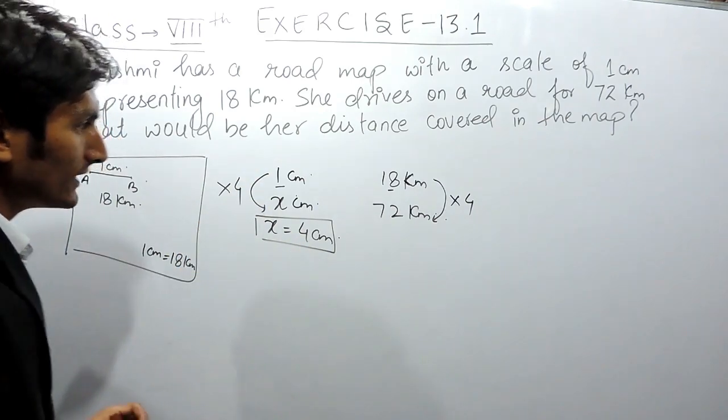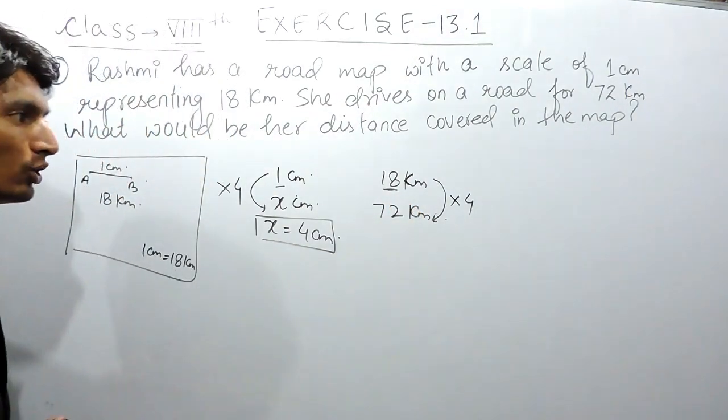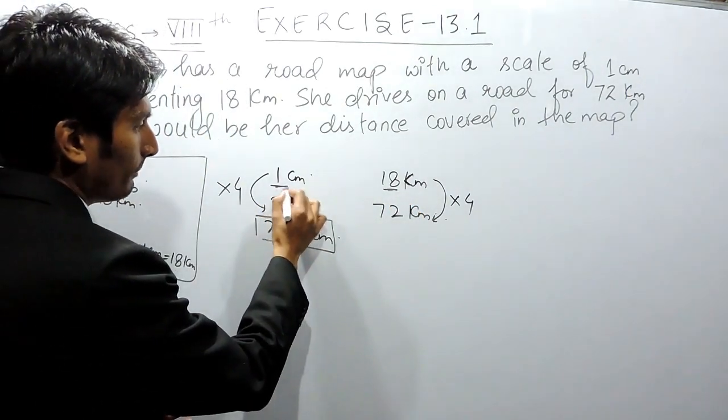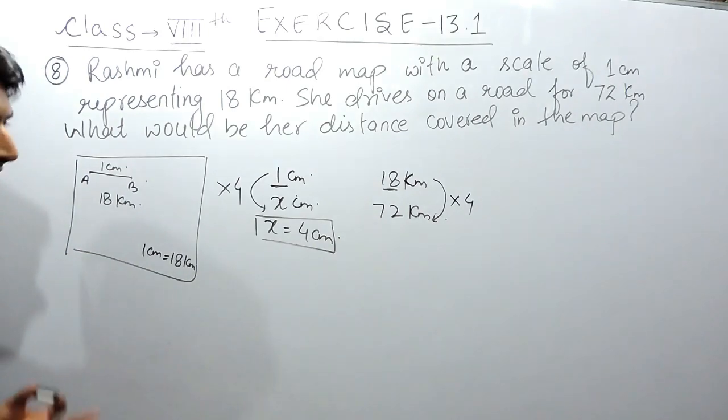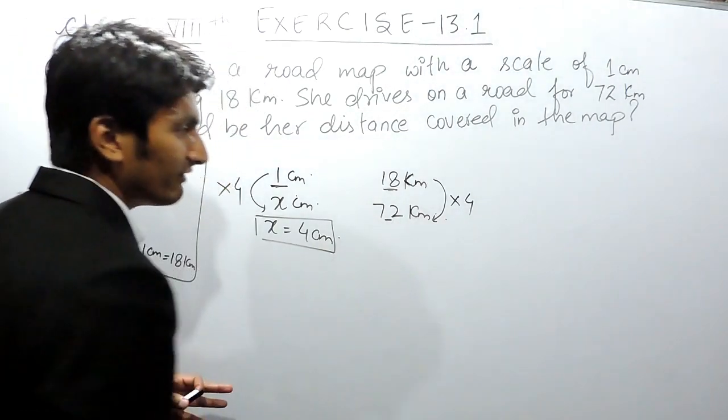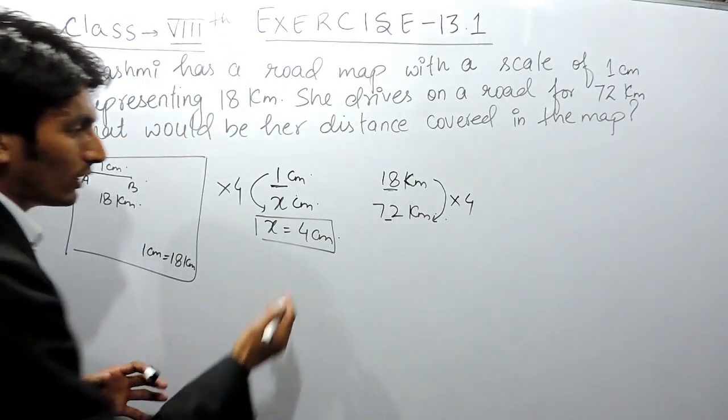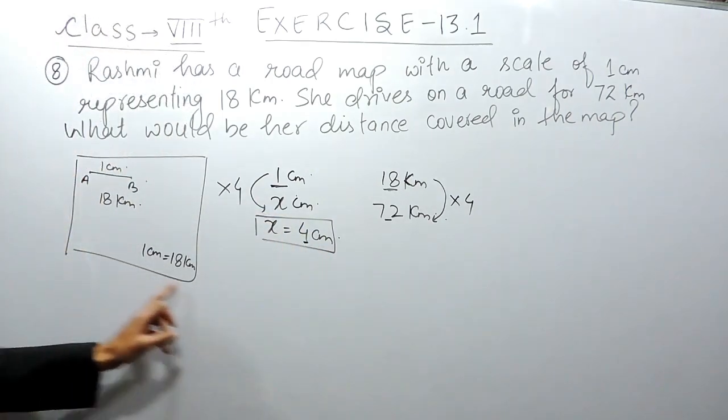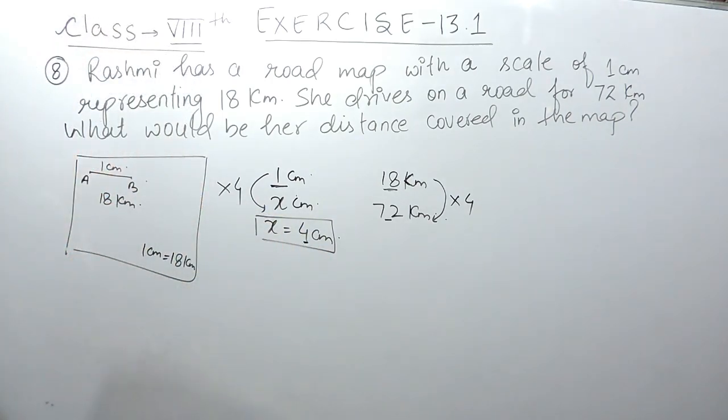You can say that when Rashmi traveled 18 kilometers on actual ground, on map she is traveling 1 centimeter. And if Rashmi is traveling 72 kilometers on actual ground, she is traveling 4 centimeters on her road map.